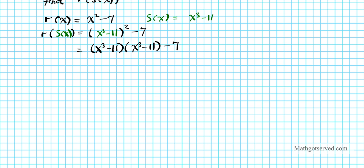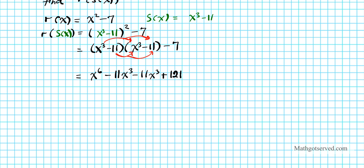To simplify, we foil it out: first, outer, inner, last. x to the third times x to the third gives x to the sixth. x to the third times negative 11 is negative 11x to the third. Negative 11 times x to the third is another negative 11x to the third. Negative 11 times negative 11 is positive 121, minus 7. Simplifying further: x to the sixth minus 22x to the third plus 114. So this is r of s of x.